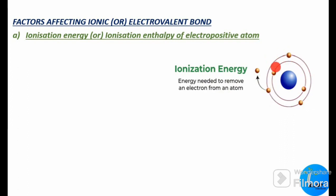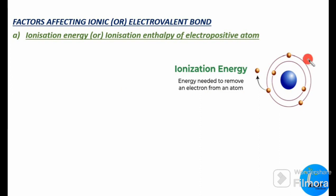This is an atom, and these are the valence electrons — the electrons present in the outermost orbit. Ionization energy is the energy required to remove the outermost electron present in the atom. Lesser this ionization energy of the electropositive atom, greater will be its tendency to form a cation. Whenever an atom releases an electron, it gains a positive charge and forms a cation.